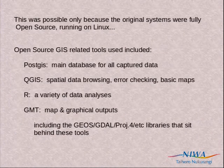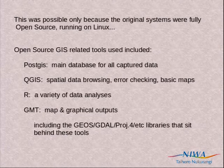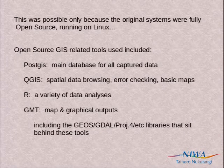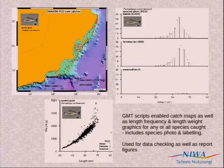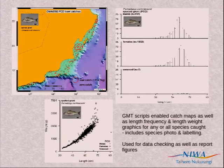The entire survey we carried out was using open-source tools. I like mentioning libraries that sit behind the tools because they tend to be forgotten, and I think they deserve an awful lot of credit for the capabilities they provide throughout the FOSS-GIS environment. We had GMT scripts, so for all the species we caught, you could run the script and it would access the database and generate length-frequency plots, length-weight plots, distribution and catch plots. We catch around a thousand species, so we could generate a thousand maps in two minutes running one script.